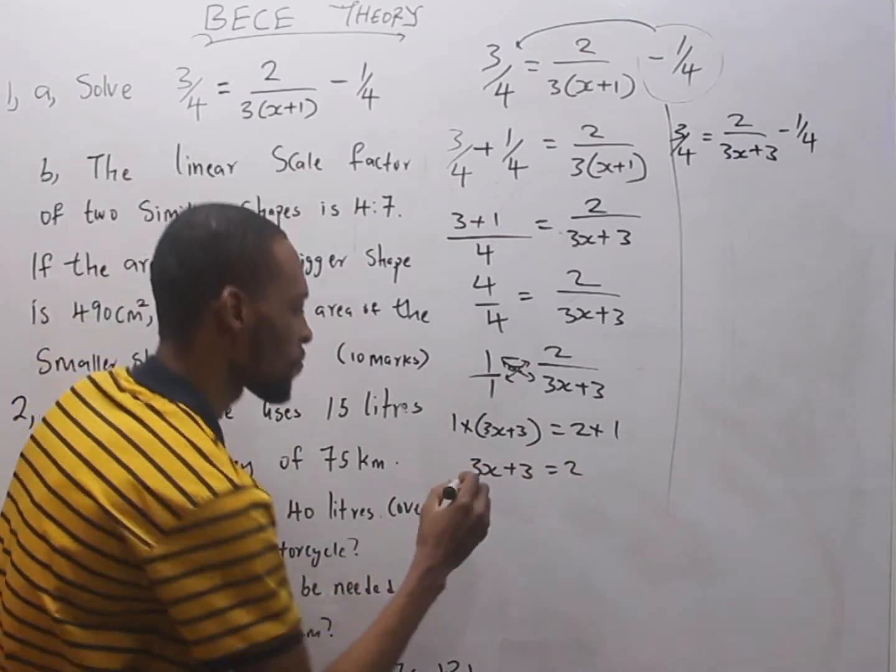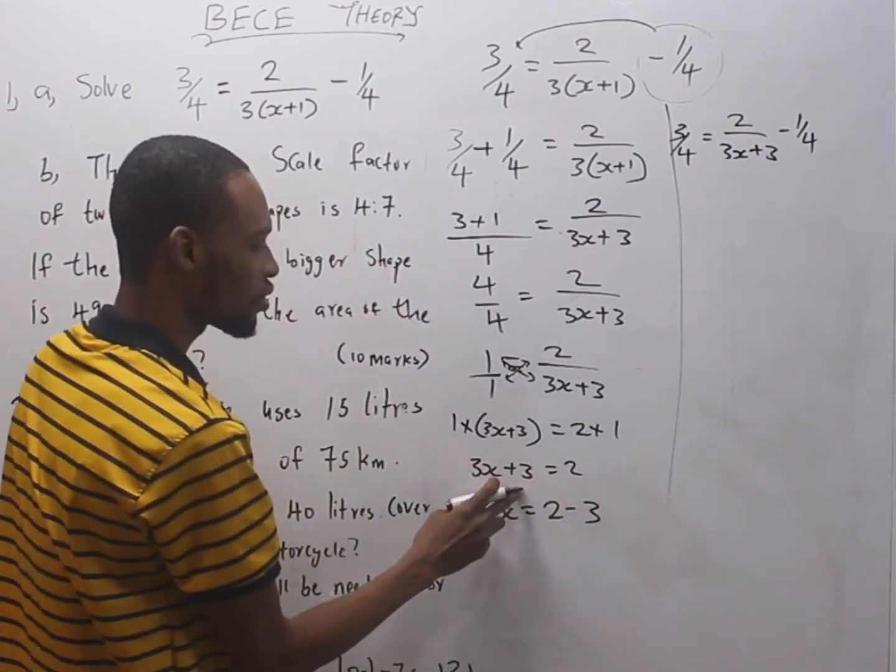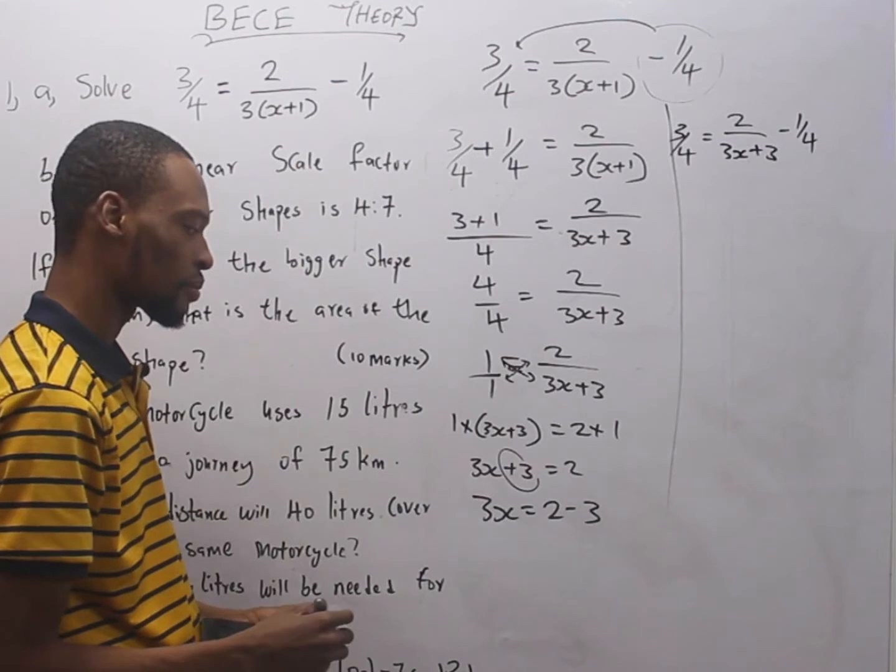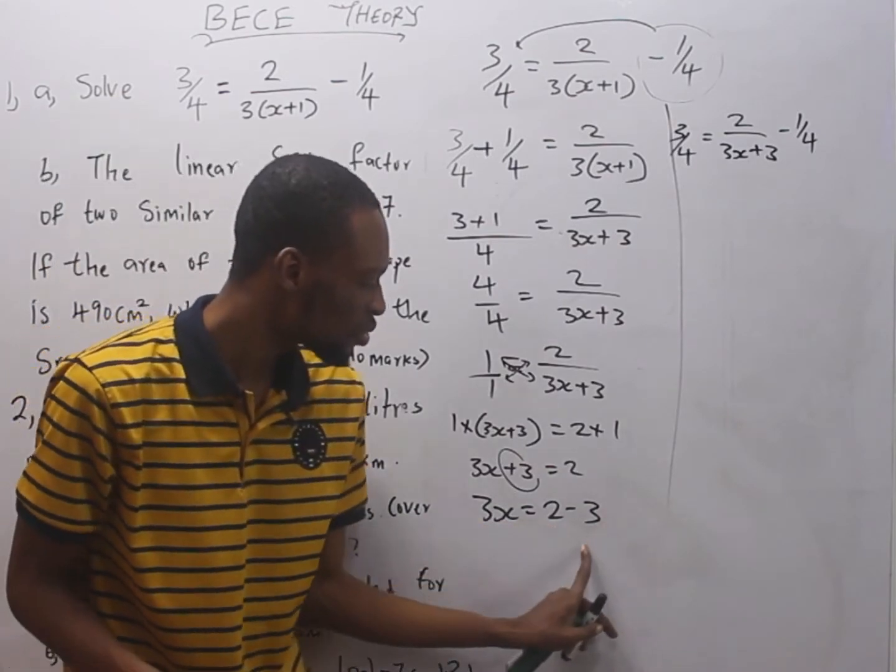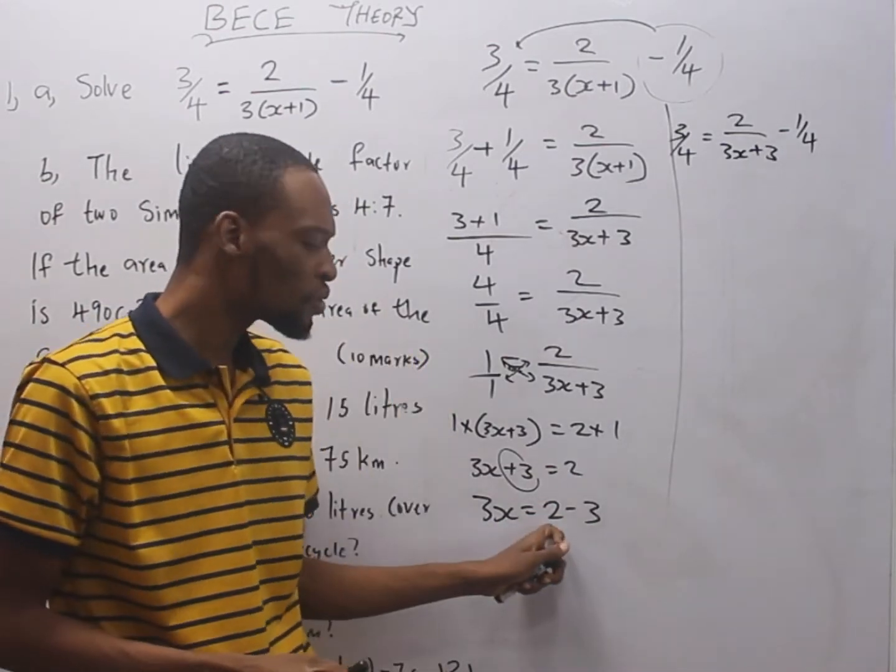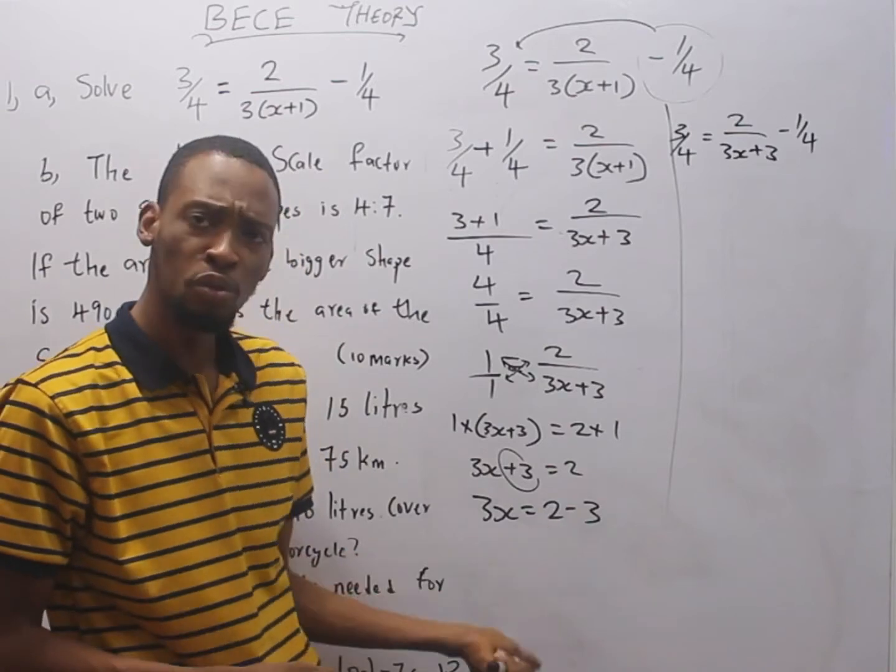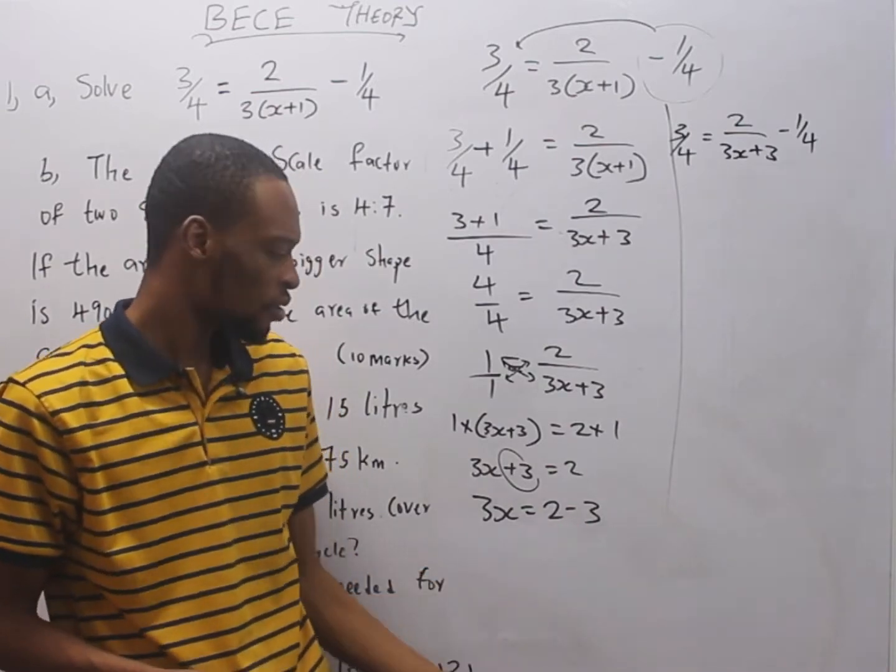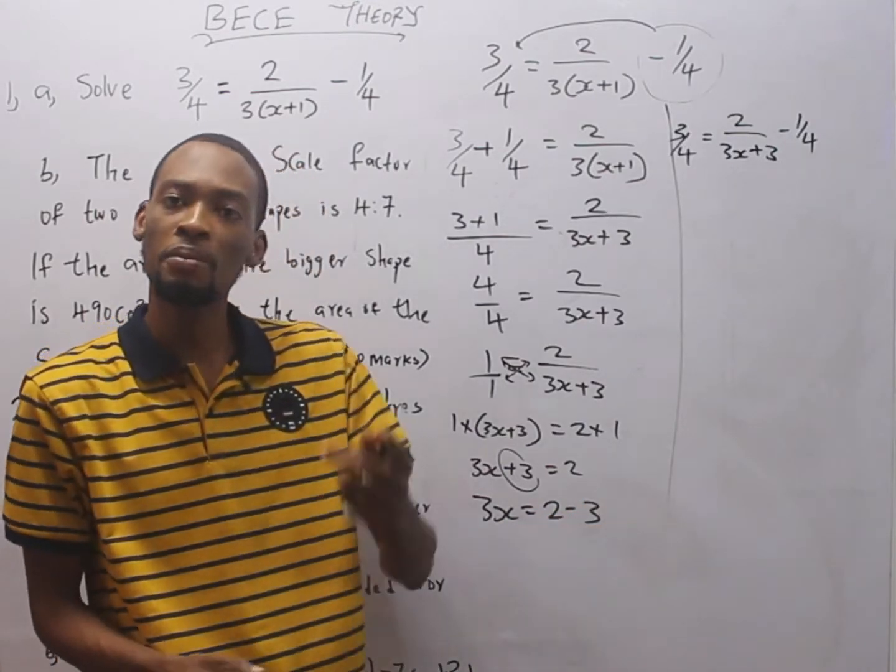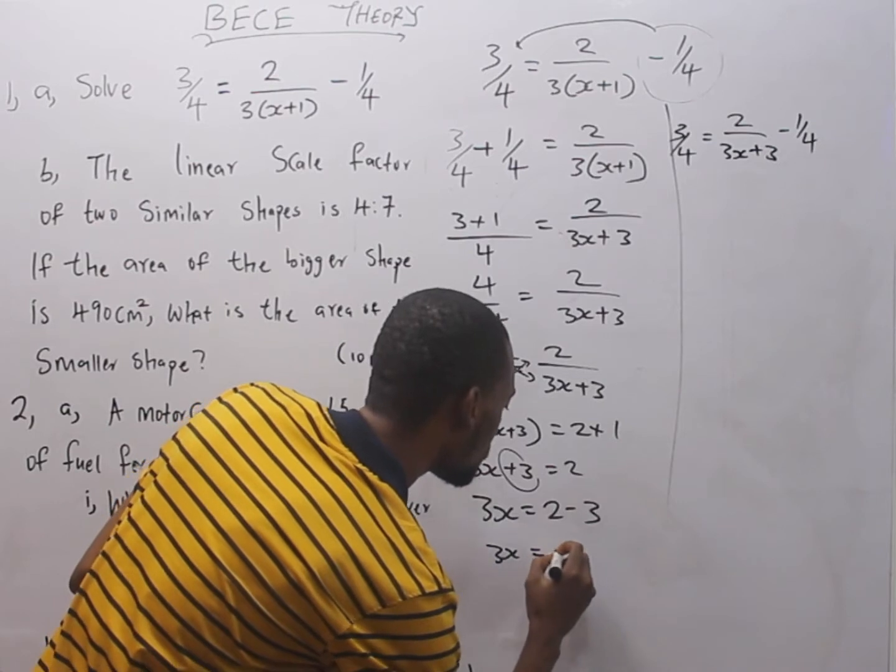1 times 3s plus 3 equals 2 times 1. 1 times anything, that value remains. Now we have a simpler value. We still collect like terms here. 3s has s, but there is no s in this other 3. So we take this to meet 2. It is positive here. As it crosses, it becomes negative.